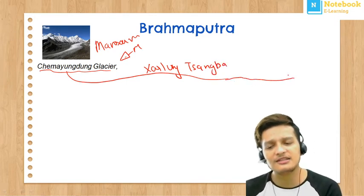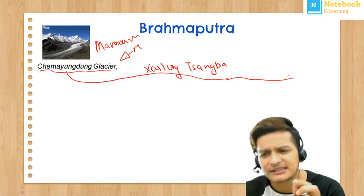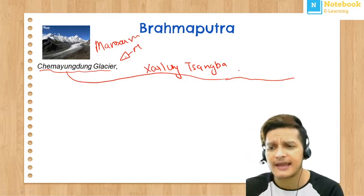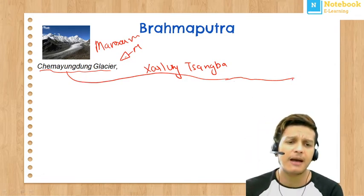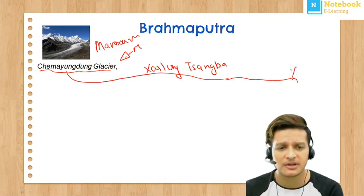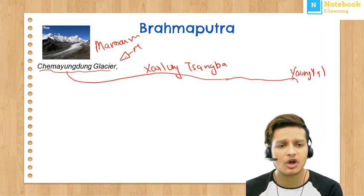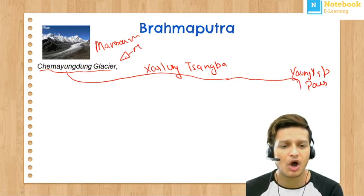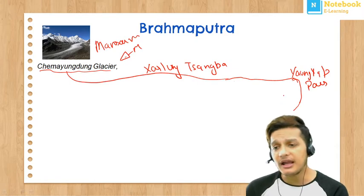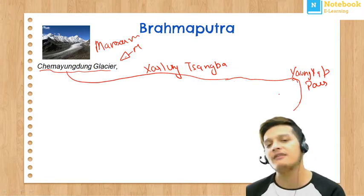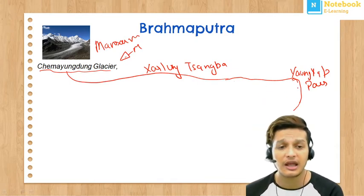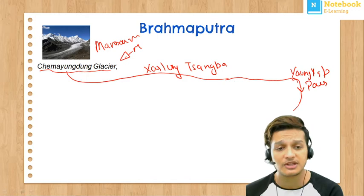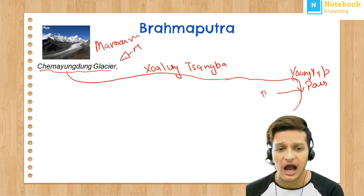The river then takes a very steep turn at the Yomcha Gap Pass and enters Arunachal Pradesh. In Arunachal Pradesh, this river is known by another name — it is called the Dihang River.